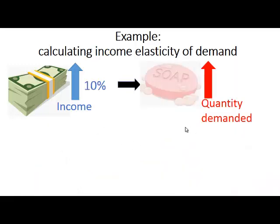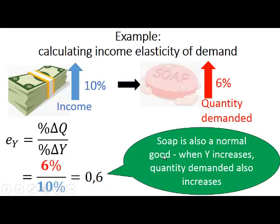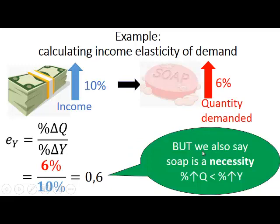Here we have the same 10% increase in income. If we look at the quantity demanded of soap, it only increases by 6%. So if we calculate the income elasticity of demand, it is 6% divided by 10%, which gives us 0.6. Soap is also a normal good because when income increases, quantity demanded of soap also increases. But soap is a necessity, not a luxury good, because the percentage change in the quantity demanded is smaller than the percentage change in income.